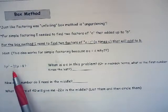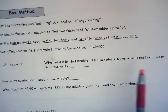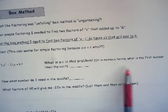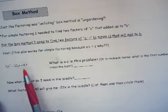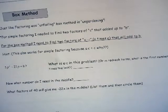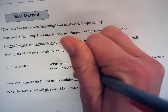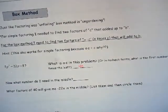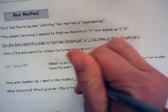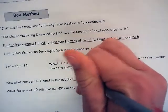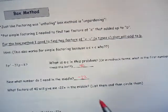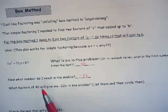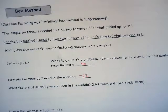What is A times C in this problem — or in redneck terms, the first number times the last? 5 times 8 is just 40. What number am I trying to get in the middle? Negative 22. So now, just like simple factoring, I'm going to ask: what factors of 40 give me negative 22 in the middle?